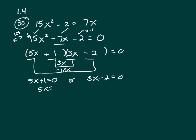So that's 5x equals negative 1, x equals negative 1 fifth. 3x equals 2, x equals 2 thirds. So there's your two answers.